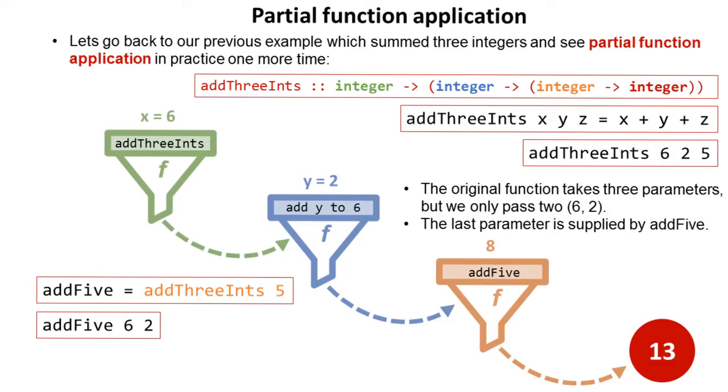We're then going to call addFive but only pass it two arguments, the third being supplied here.